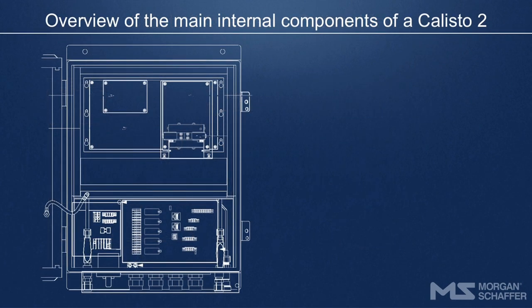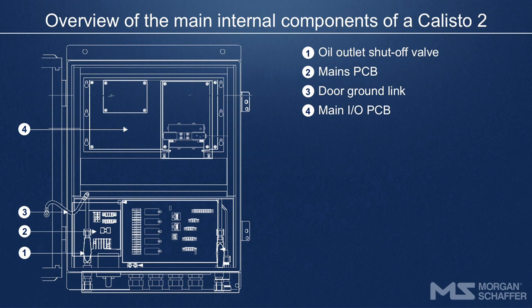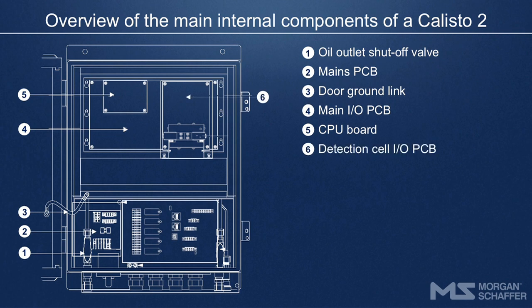The main internal components of a Callisto 2 include the oil outlet shutoff valve, mains PCB, door ground link, main IO PCB, CPU board, detection cell, and detection cell I/O PCB.